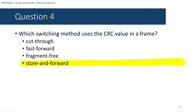Question number five: What action will occur if a host receives a frame with a destination MAC address it does not recognize? The options are: the host will discard the frame, the host replies to the switch with its own IP address, the host forwards the frame to all other hosts, or the host returns the frame to the switch. The answer is the host will discard the frame, because hosts have no idea what to do with an unrecognized destination MAC address.